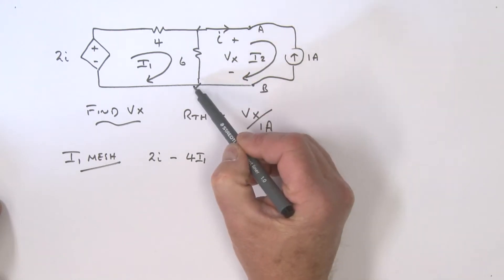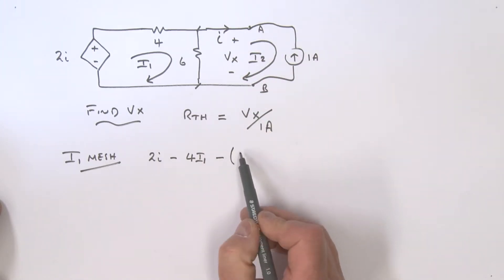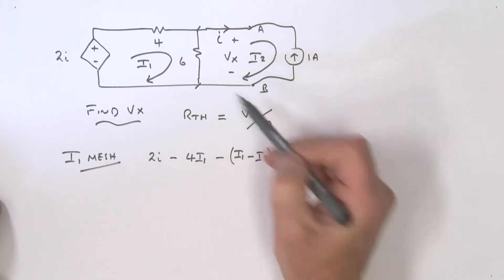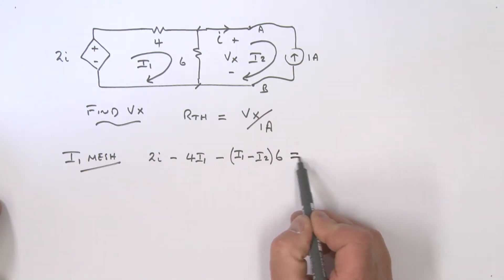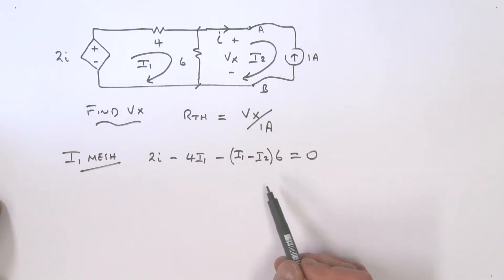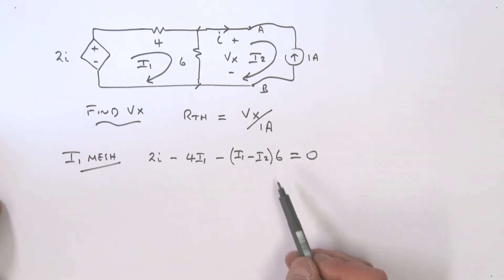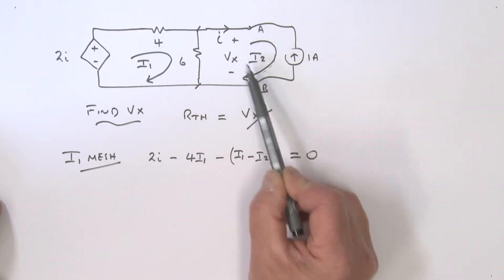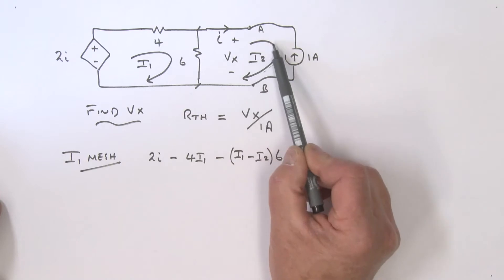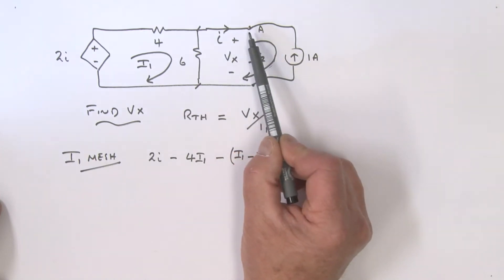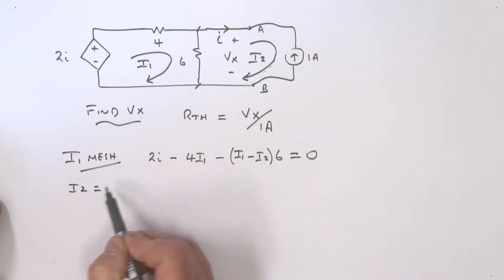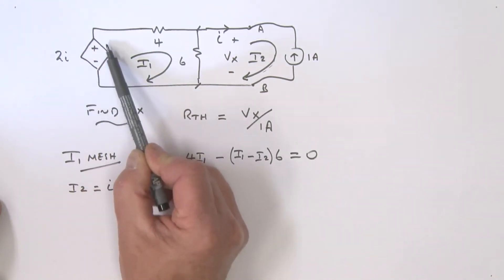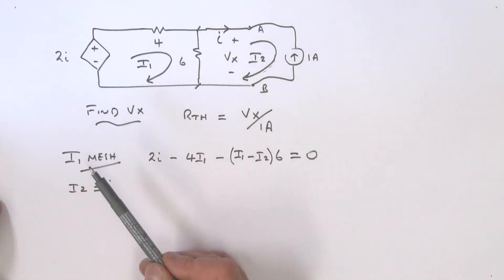Then there's the voltage drop across the 6-ohm resistor: minus (I1 minus I2) times 6, all equal to zero. Now, I2 flows in the same direction as the current I associated with the dependent voltage source, so we can say I2 equals I. And since the 1-amp source flows in the opposite direction to I2, we can say I2 equals minus 1.